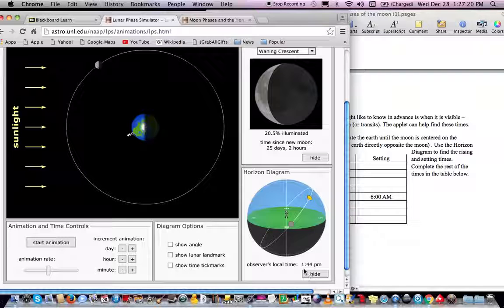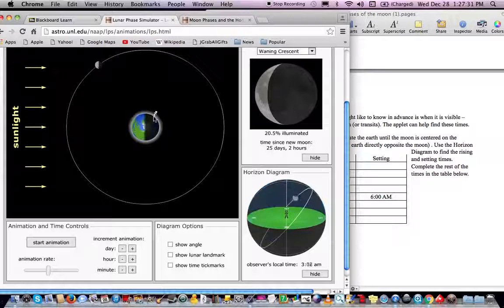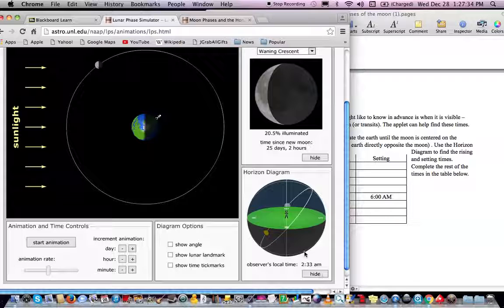The times of rising and setting are going to be gotten by looking at the observer's local time. So you can see here, we can see what the time would be when it sets, and the time it would be when it rises. And all of that's going to be down here.